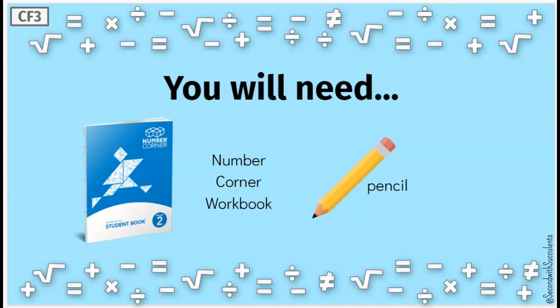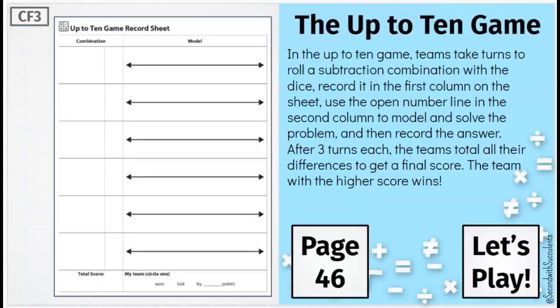You can pause the video now to get what you need. When you have your Number Corner book, open it up to page 46. I want you to take a moment to look at the page and think about what you notice on the Up to 10 game record sheet.